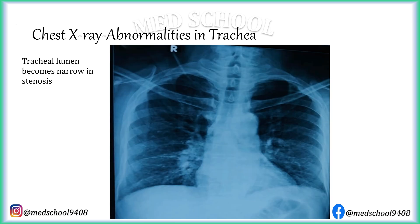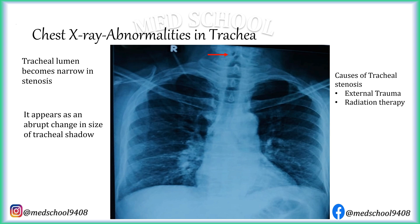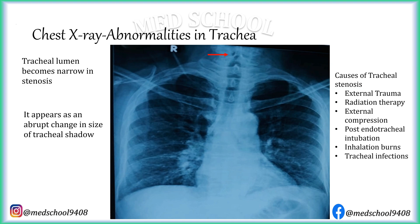Tracheal lumen becomes narrow in stenosis. It appears as an abrupt change in size of the tracheal shadow. Patient presents with breathing difficulty along with stridor. Causes of tracheal stenosis are external trauma, radiation therapy, external compression, post-endotracheal intubation, inhalational burns and tracheal infections.